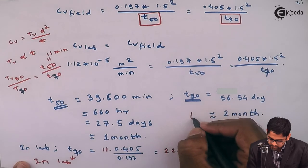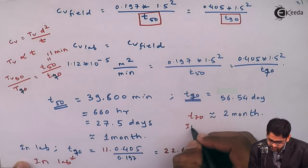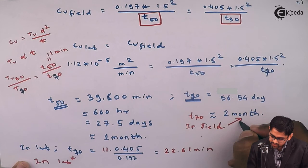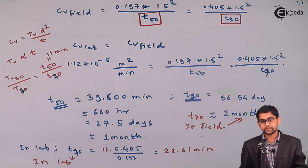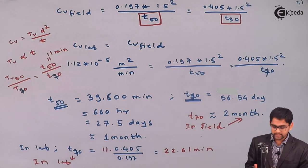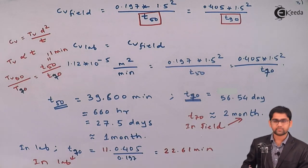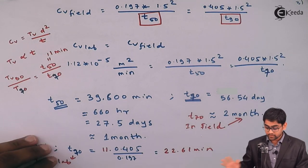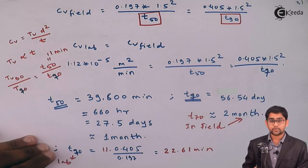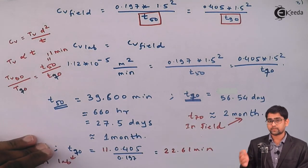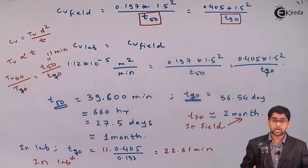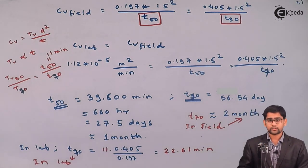22.61 minutes is the time for 70% consolidation in the lab, while in the field it takes a very long period — 56.54 days. In the lab you can finish the test within half an hour, but this has very significant implications for foundation and settlement problems in practice. We will move on to other problems in the next video. Thank you.